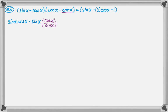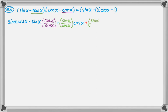Now I'm going to take negative tangent and distribute it. Tangent isn't really helping me, so I'm going to replace that with sine over cosine. So I have: negative (sine over cosine) times cosine, and then negative tangent times negative cotangent — negative times negative is positive — and I'm replacing tangent with sine over cosine and cotangent with cosine over sine.